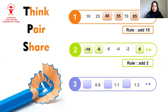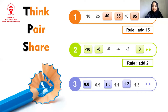And the last number: what is the first term? It's 0.8. And we have 0.9, then 1.0, and then 1.1. What is the number between 1.1 and 1.3? Correct, it's 1.2. So what is the rule? That's correct, the rule is add 0.1.